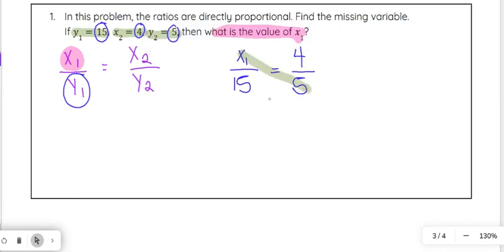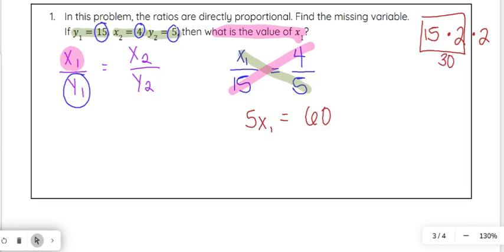So we're going to go ahead and cross multiply. x1 and 5 get multiplied together. And then 15 times 4 get multiplied together. So 5 times x1 is just going to be 5x1 equals, and then our other cross product, 15 times 4. So 15 times 4 is 60. If you need a quick reminder, you could do 15 times 2 times 2, because 2 times 2 is 4. And what I mean by that is 15 times 2 is 30, and then you multiply that by 2, and you get 60. So if it helps you to kind of break down those numbers to get that, since you won't always have a calculator, for example, on the test, then that is helpful. So let's go ahead and solve that. So 5x1 equals 60. We divide both sides by 5, and we get x1 equals 60 divided by 5 is 12. So our answer on this one is 12.